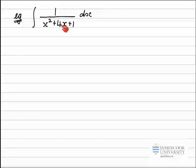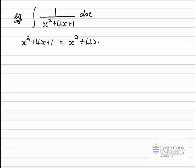So we'll just deal with the quadratic first on the bottom line: x squared plus 4x plus 1. To complete the squares, I'll just write down the first two terms: x squared plus 4x. And I note the coefficient of x, which is 4 in this case.